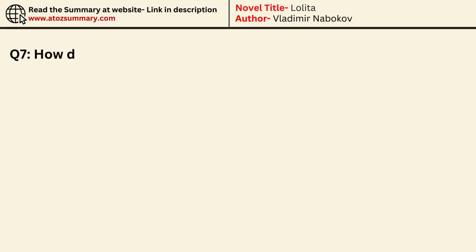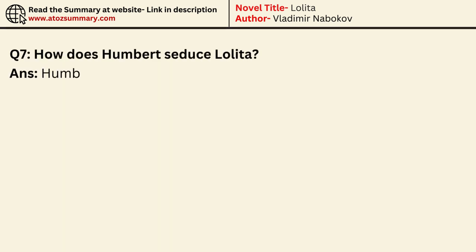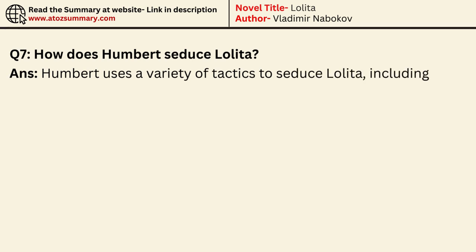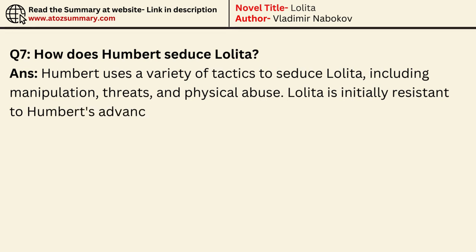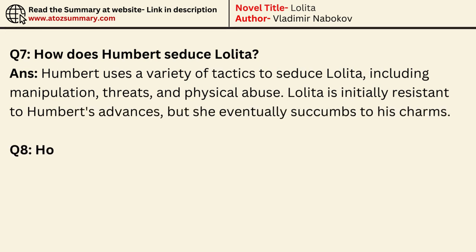How does Humbert seduce Lolita? Humbert uses a variety of tactics to seduce Lolita, including manipulation, threats, and physical abuse. Lolita is initially resistant to Humbert's advances, but she eventually succumbs to his charms.